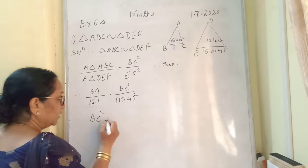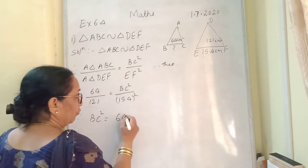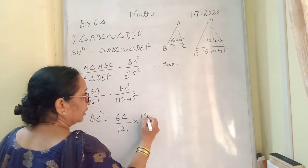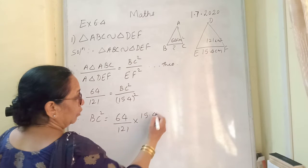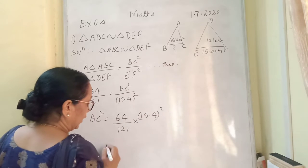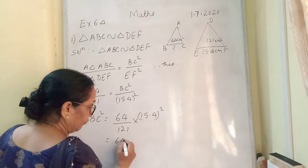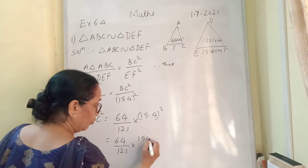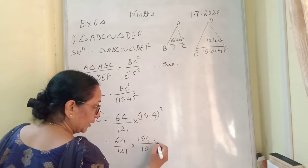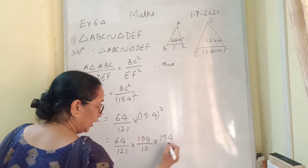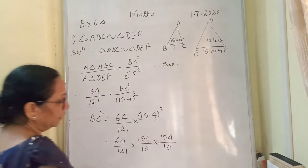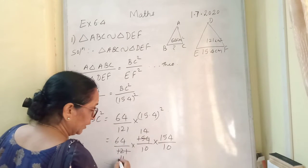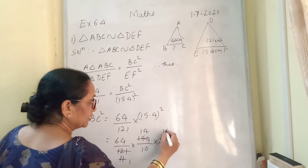Therefore, BC square is equal to 64 upon 121 into 15.4 whole square. Now this can be written as 64 upon 121 into 154 upon 10, into 154 upon 10. Now 11 11s are, here 11 14s are, 11 ones are, 11 14s are.